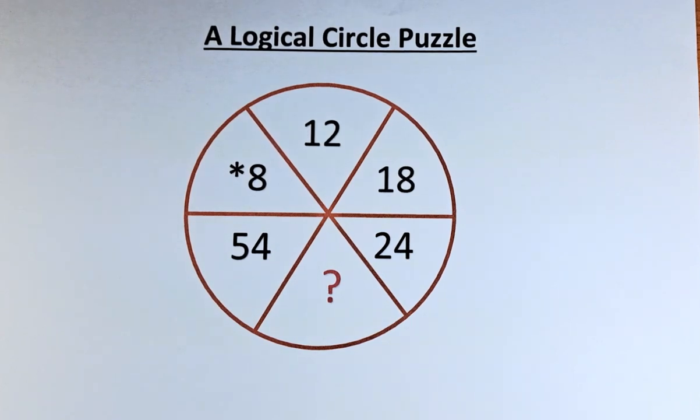Good day! Are you able to find the missing number which is represented by the question mark in this logical circle puzzle? This puzzle starts with 8, followed by 12, 18, 24, a question mark, and it ends with 54. So what number represents the question mark?